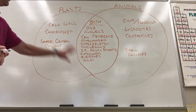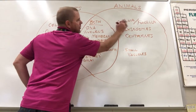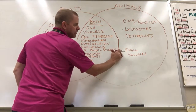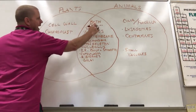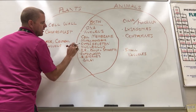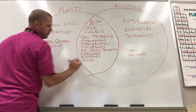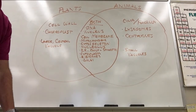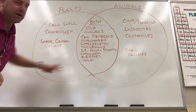To summarize the Venn diagram: plants have cell walls, chloroplasts, and a large central vacuole. Animals have cilia and flagella for movement, lysosomes and centrioles for division, and small vacuoles — they have a whole bunch of them. In both: DNA, nucleus, cell membrane, mitochondria, cytoskeleton, nucleolus, both types of ER (rough and smooth), cytoplasm, ribosomes, and Golgi apparatus. All of these apply to eukaryotes — cells with a nucleus and membrane-bound organelles.